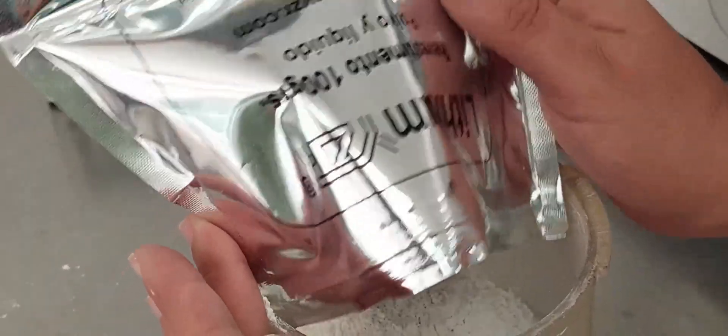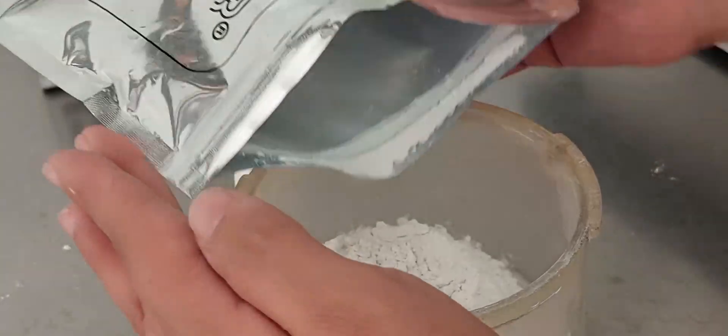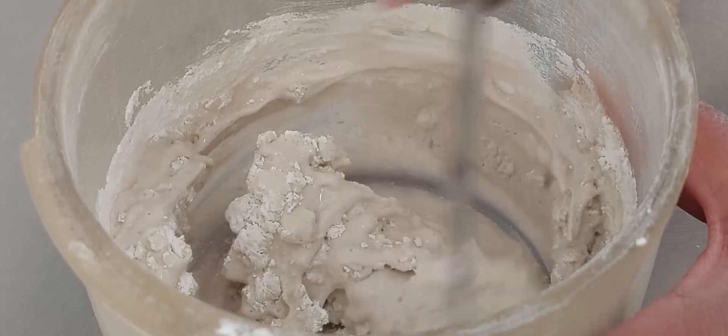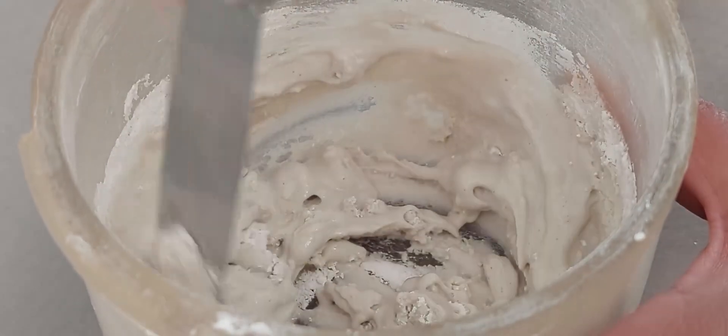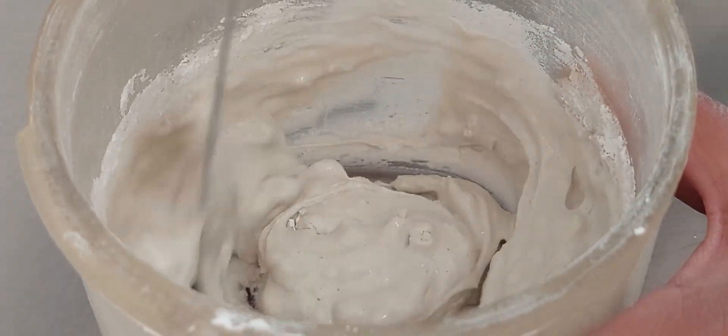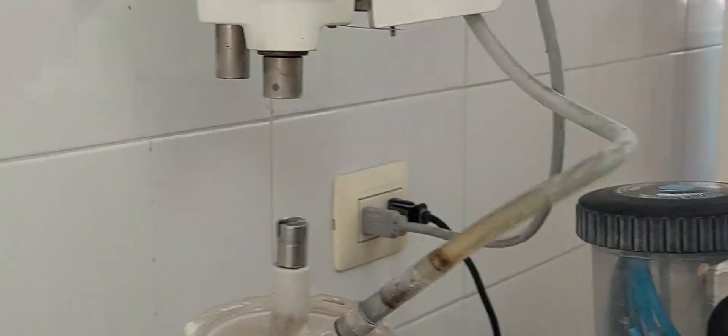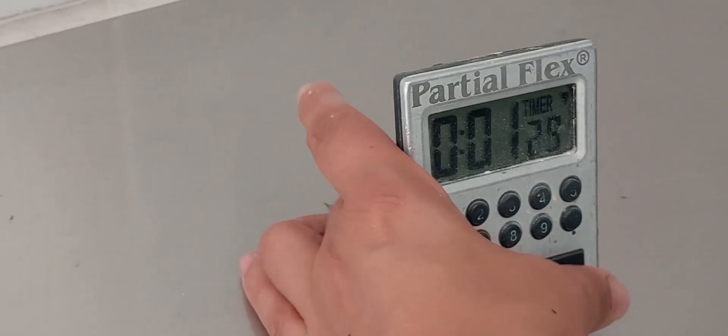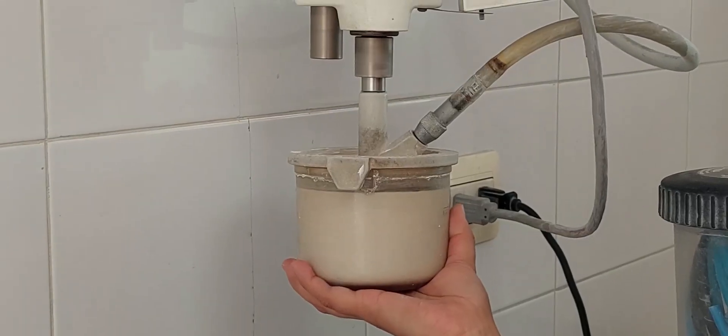Then, empty the 100 grams of lithium disilicate investment powder into the bowl. Prepare a preliminary mixture using a metal spatula. Then, place it into an electric vacuum spatulator. Spatulate for one minute.